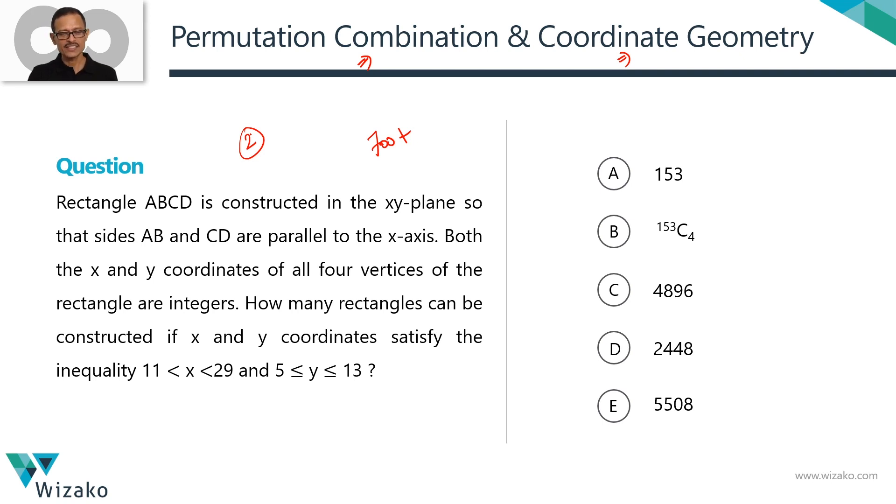Rectangle ABCD is constructed in the XY plane so that sides AB and CD are parallel to the X axis. Both the X and Y coordinates of all four vertices of the rectangle are integers.